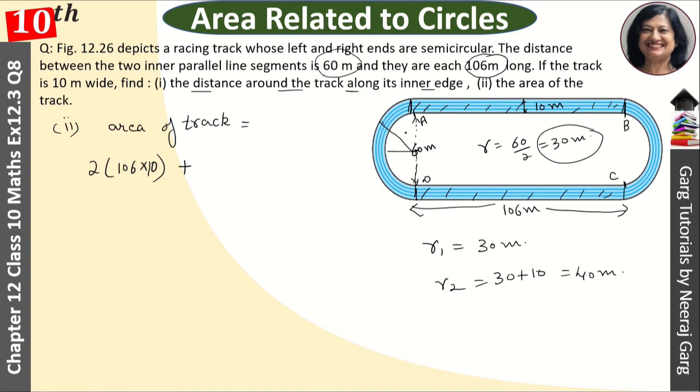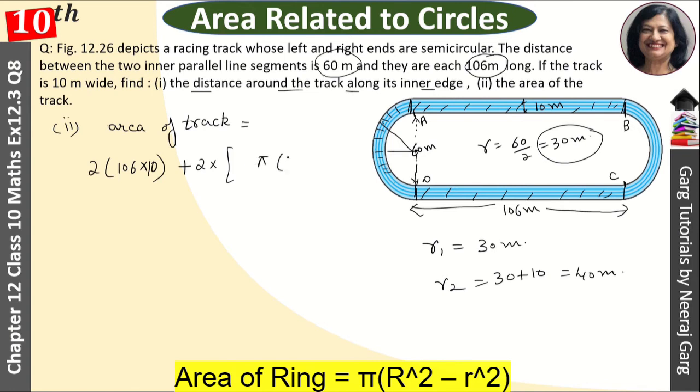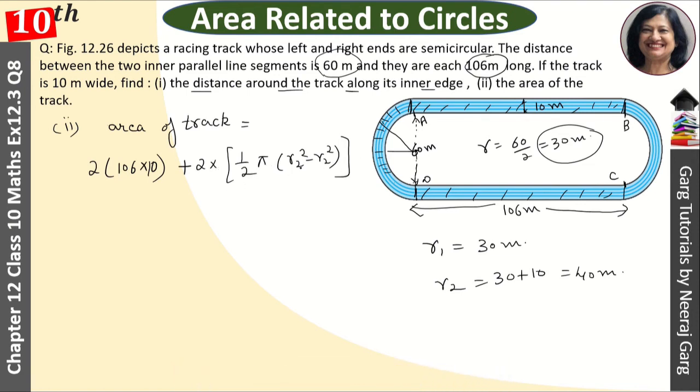So what do you need to do? You will use the ring formula. What is a ring? π r2² minus r1². Because r2 is greater here. Because it's semi, we will put 2 into the formula, and this 2 will cancel. Because r2 is greater than r1, we have written r2 first.